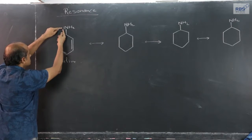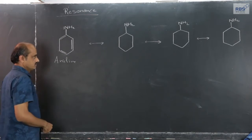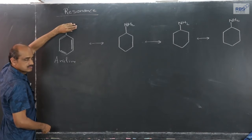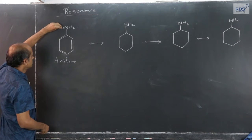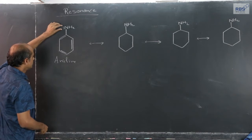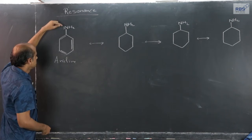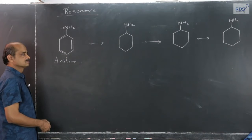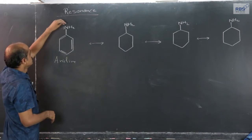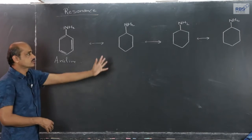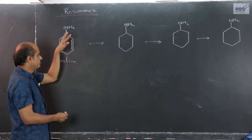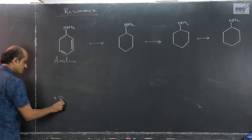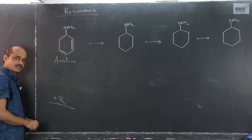Since electron density increases in the ring, we consider that the electron density from the group attached to this ring — specifically the electron density on the nitrogen atom in the NH2 group — enters into the ring, increasing the electron density in the ring and developing a positive charge on nitrogen. Such resonating forms developed because of a group that increases electron density in the ring come under what we call positive resonance or plus R effect.